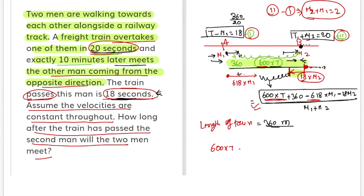And here I will write minus 618M1, minus 18M2, plus 360, minus 36...